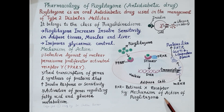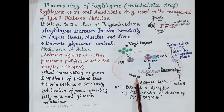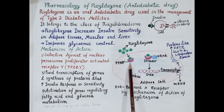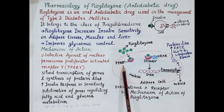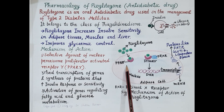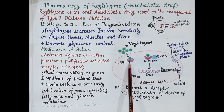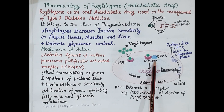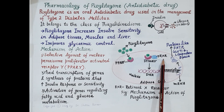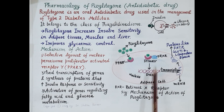Now let's understand the mechanism of action of pioglitazone. Look at this figure — this is an adipose cell, or fat cell, and this is its nucleus. There is a nuclear receptor called PPAR-gamma, that is peroxisome proliferator-activated receptor gamma. PPAR-gamma is located on the nucleus of fat cells, muscles, and the liver. Pioglitazone is a selective agonist of PPAR-gamma. It binds to and stimulates PPAR-gamma, which then undergoes dimerization — it forms a dimer with retinoid X receptor, or RXR.